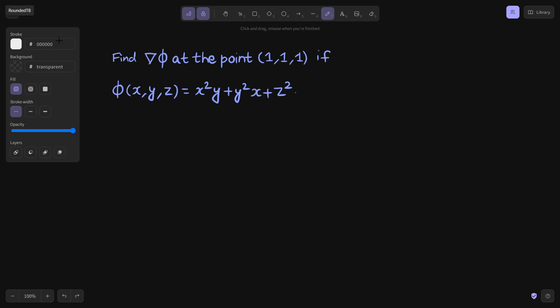We need to find gradient of phi at the point (1,1,1) if phi, which is a function of x, y, z, is given as x²y + y²x + z².